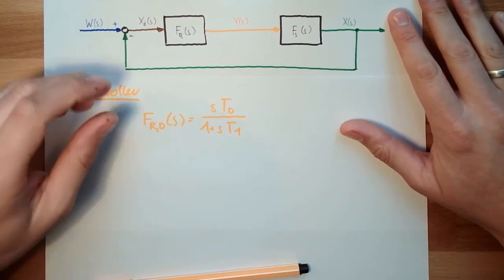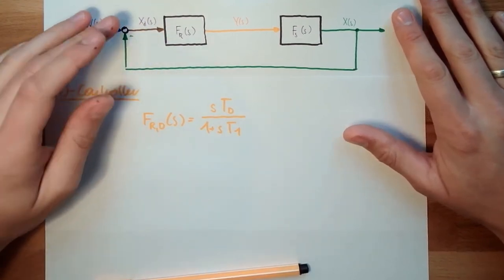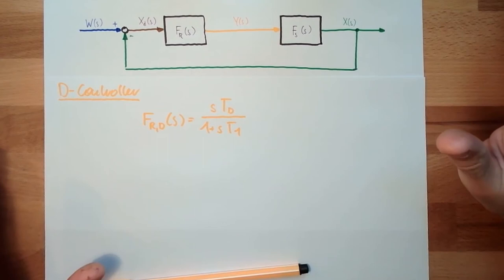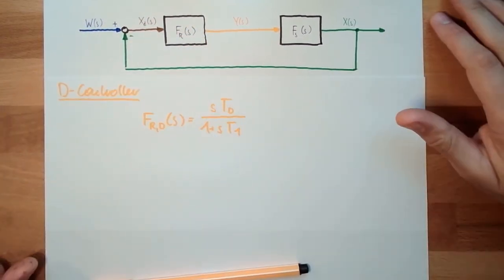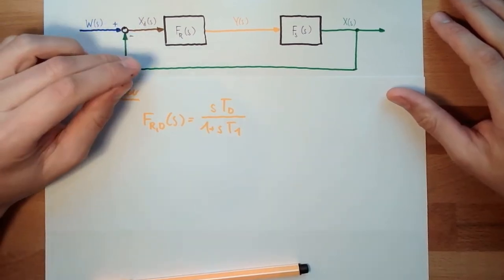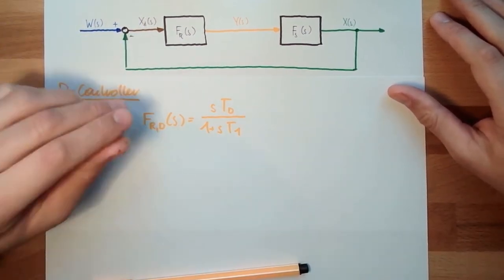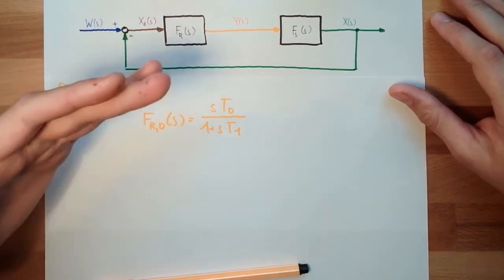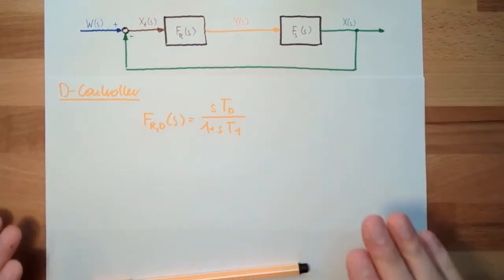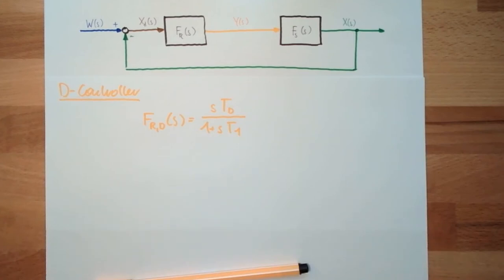It's just reacting. If this is changing, it reacts. And if it stays constant, everything's fine. If it's constant very close, then we are fine. If it's constant very far away, it is also fine for the D-controller. So a D-controller alone is not suitable.